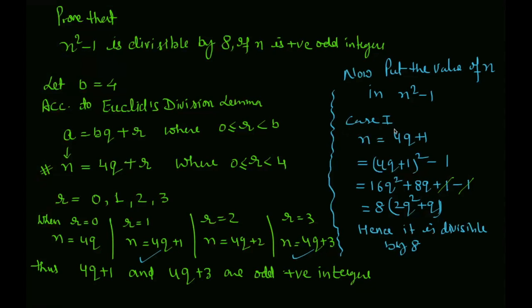Case 1, when n equal to 4q plus 1. Then n squared minus 1 equals 4q plus 1 whole square minus 1. Expanding this identity, 16q square plus 8q plus 1 minus 1. 1 is cancelled with 1. And 8 common nikal jayega, 2q square plus q. Hence, this is divisible by 8.